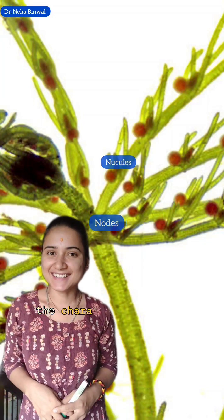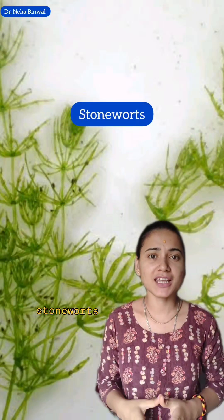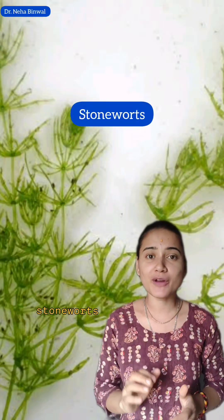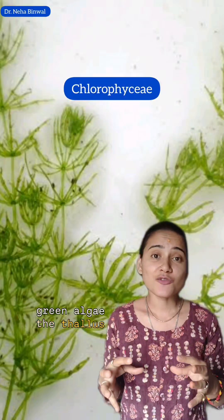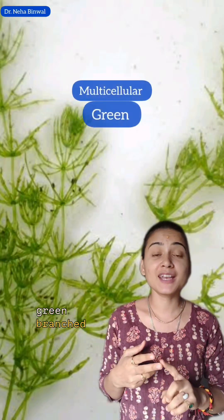Kara, commonly known as stonewort, is a member of Chlorophyceae — that means it is a green alga. The thallus of Kara is multicellular.